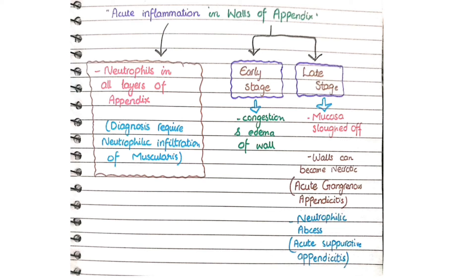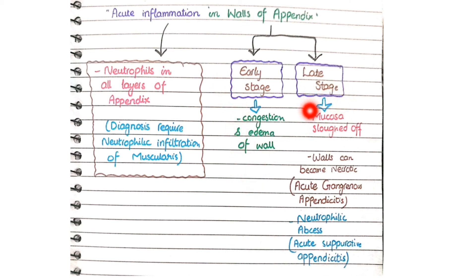To revise all the microscopic features: in acute appendicitis you see neutrophils in all layers of appendix, and neutrophilic infiltration of the muscularis is required to confirm the diagnosis. In the early stage you see congestion and edema of the walls; in the later stage, sloughing off of mucosa. The two late complications are acute gangrenous appendicitis — necrosis of the walls — and acute suppurative appendicitis — neutrophilic abscess.